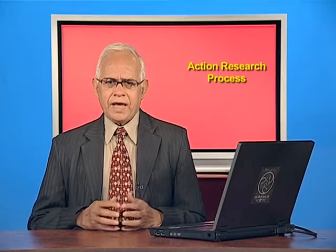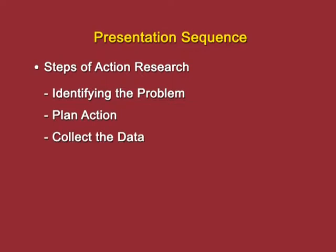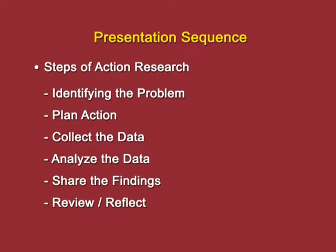In the earlier episode, I had explained the importance of action research, why does everyone not do action research, and the limitations of action research. I have already explained that action research refers to a process, and if it is a process then there must be steps. Now, in this part one, I am going to explain the different steps to be followed in conducting action research. The first step is identifying the problem, second is plan action, third is collect the data, next is analyze the data, next is share the finding, and the last one is review and reflect.